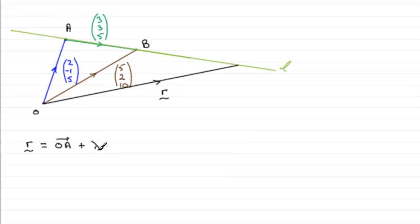We'll call it lambda, you can use any letter you like, lambda in the direction of the line. So you take a vector that is parallel to the line. And the most obvious vector to take is the vector A to B.